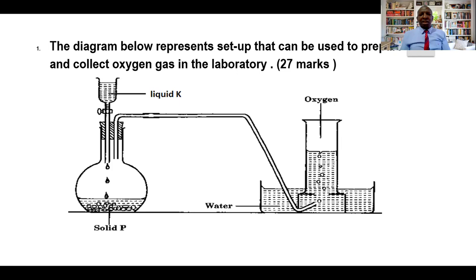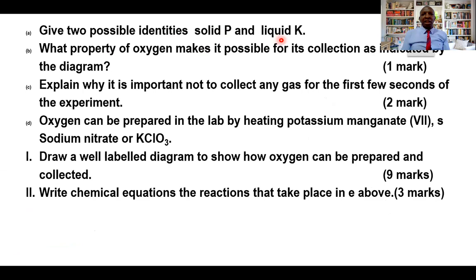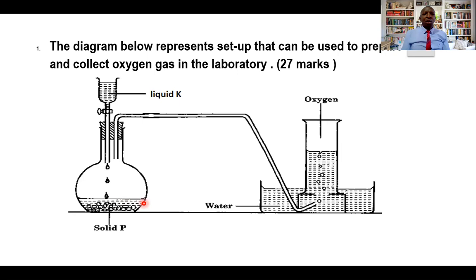Part number one: give two possible identities of solid P and liquid K. You need to remember that wherever you're preparing oxygen, there are two possible solids that can react with two possible liquids. So name two possible identities of solid P and liquid K. The liquid K is here and solid P here. There are two possibilities that can be liquid K reacting with a particular solid, and there are also two possible solids that can be used.